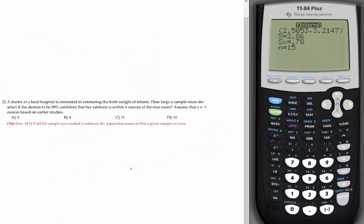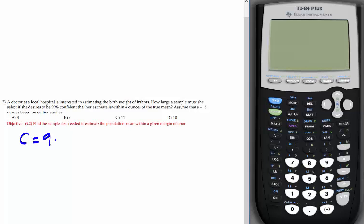In this exercise, we're asked to estimate the sample size needed to construct an interval. A doctor at a local hospital is interested in estimating the birth weight of infants. How large a sample must she select if she desires to be 99% confident that her estimate is within 4 ounces? Anything that comes after 'within' is the margin of error, so E is 4 ounces. Assume that s equals 5.